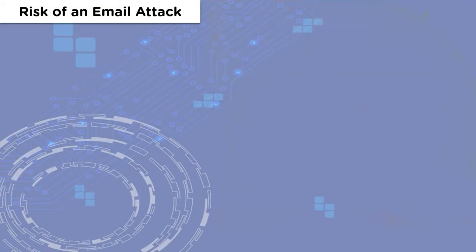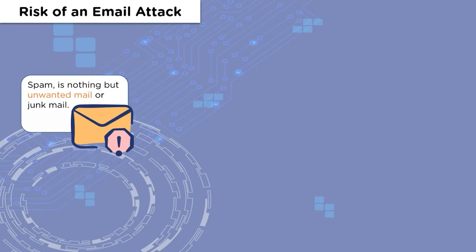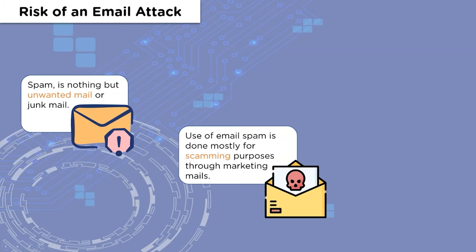To understand better, we've all come across different types of spam email in our regular lives. We often receive marketing spam or institution spam that promotes different types of offers if we click on links or visit certain websites. This is what is known as spam — unwanted mail or junk mail.